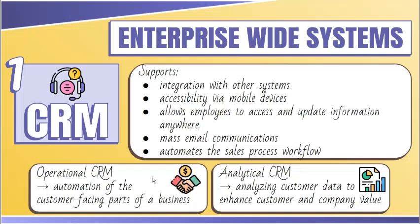There are two types of CRM. The first is operational CRM, which is focused on the automation of the customer-facing parts of a business, like targeted communications and offers to customers. The second is analytical CRM, which is focused on analyzing customer data to enhance customer and company value. Analytical CRM includes data such as sales history, credit scores, marketing loyalties, and campaign responses.